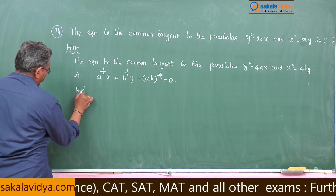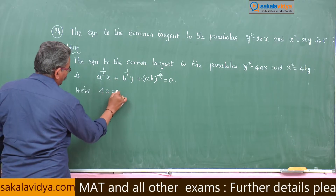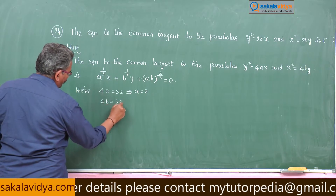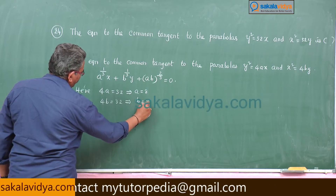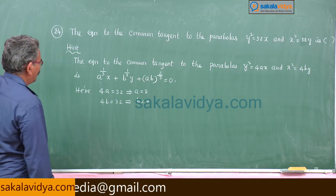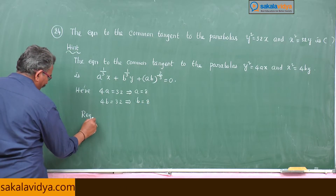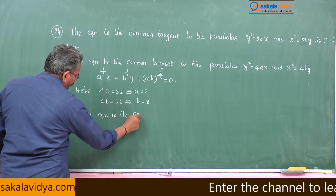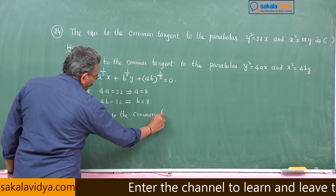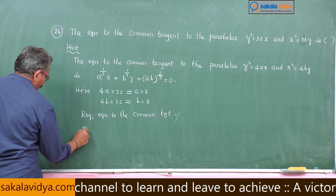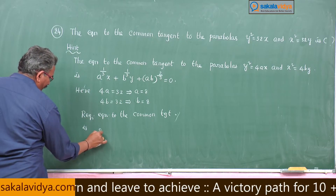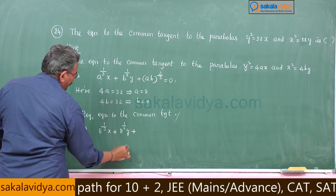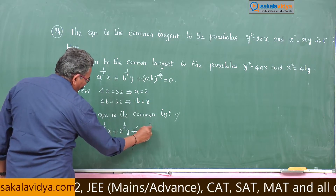Here, 4a = 32, so a = 8. Also 4b = 32, so b = 8. The required equation to the common tangent is: 8^(1/3) · x + 8^(1/3) · y + 64^(2/3) = 0.